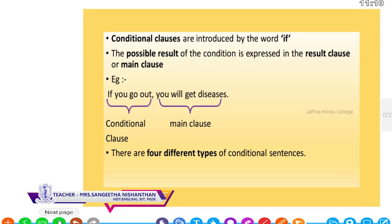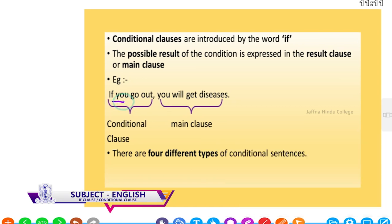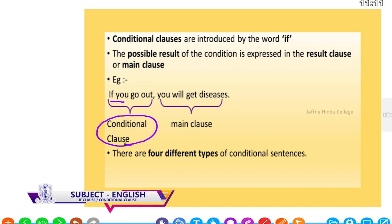For example: if you go out, you will get diseases. Here the clause with 'if' is called the conditional clause, and if the condition is met — if you go out — you will get diseases. That result is the main clause or result clause.